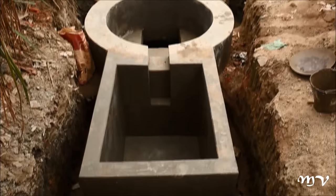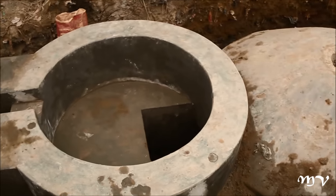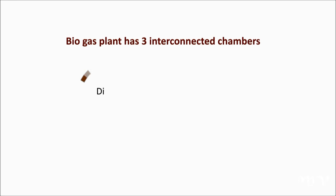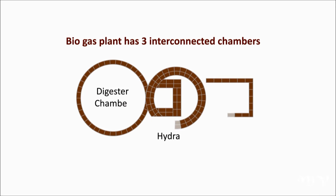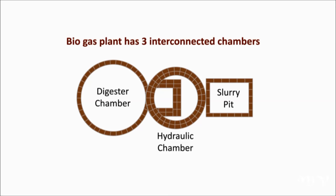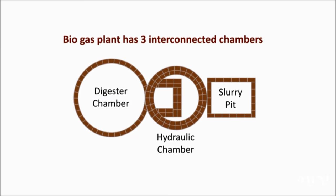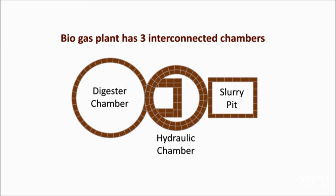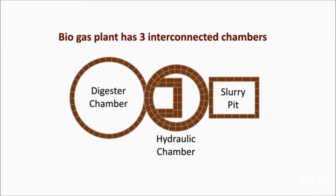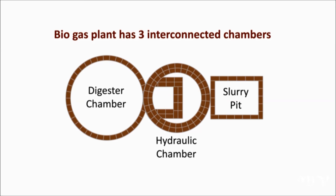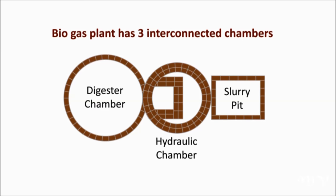The constructed view of the biogas plant shows it has three interconnected chambers: the digester chamber, the hydraulic chamber, and the slurry pit. The volume or size of the biogas plant is designed considering the amount of sludge to be handled. The construction must follow precise construction steps. Let's take an example of a two cubic meter biogas plant.